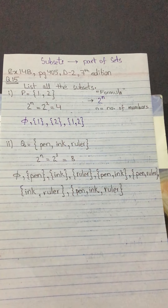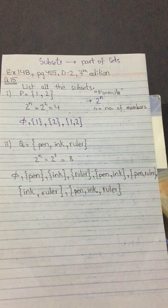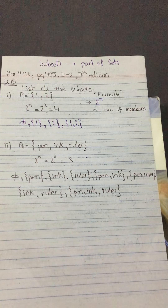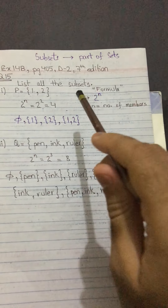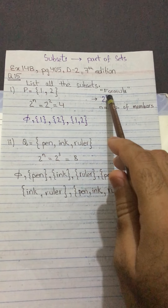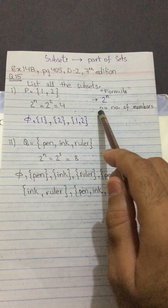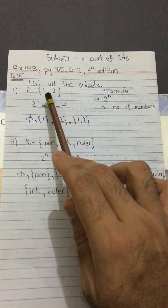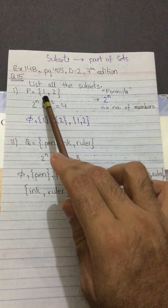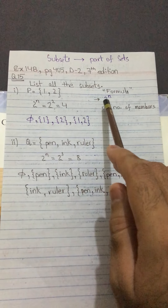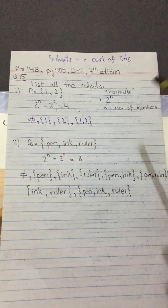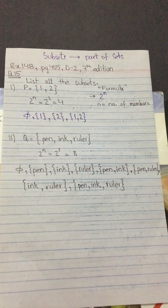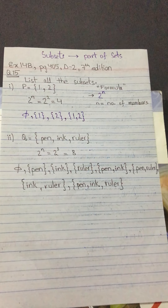Before writing the subsets, the first important question is: how many subsets will be formed? To determine that, we have a very simple formula — 2 to the power n, where n is the number of members inside the curly brackets. You count the members, replace n, and find the number of subsets. Then you can list them.